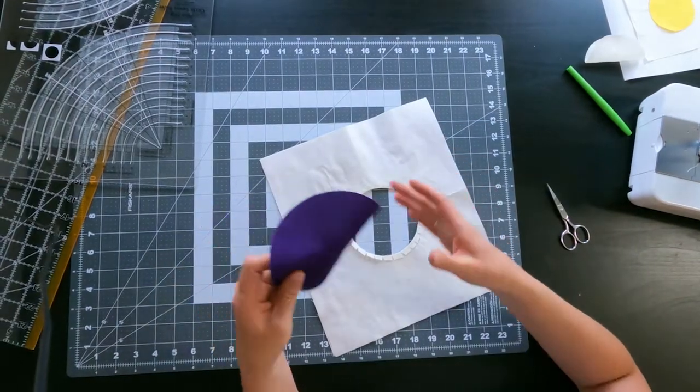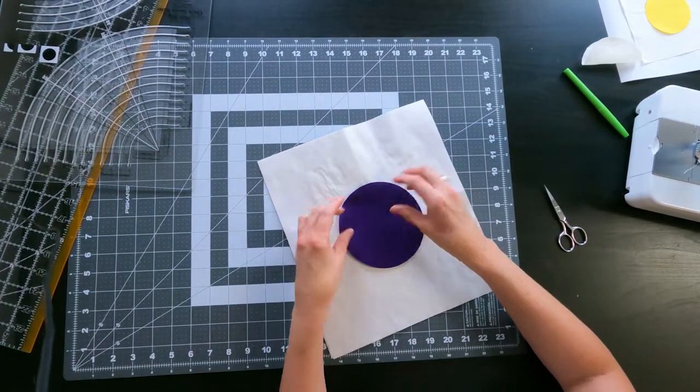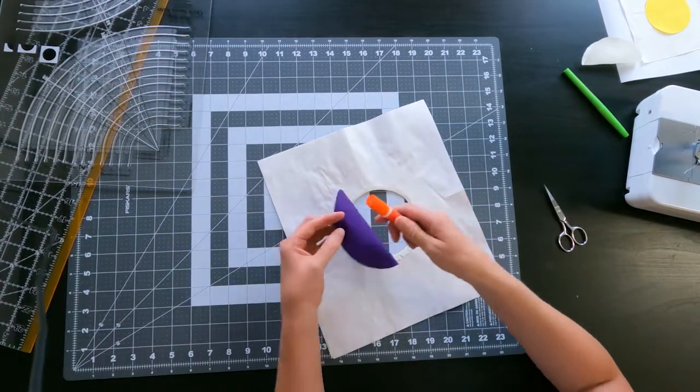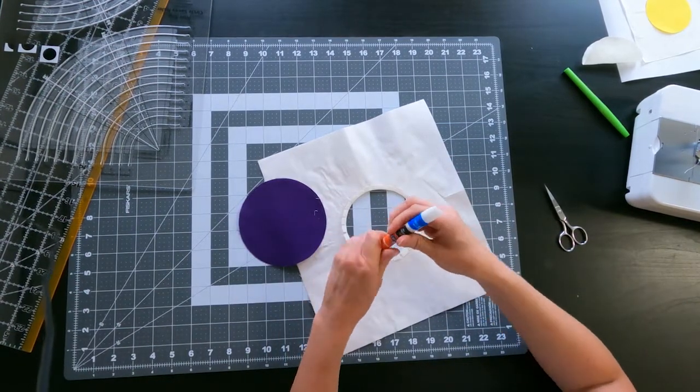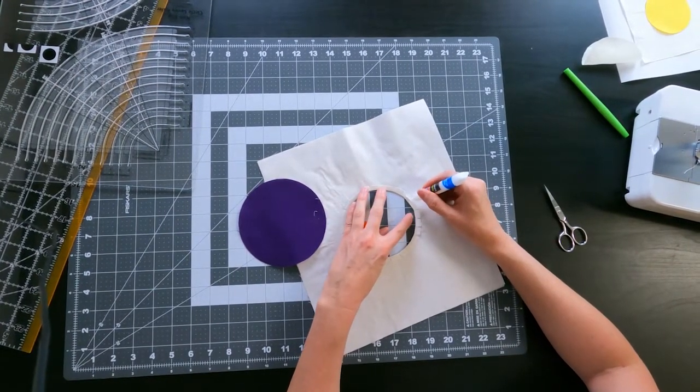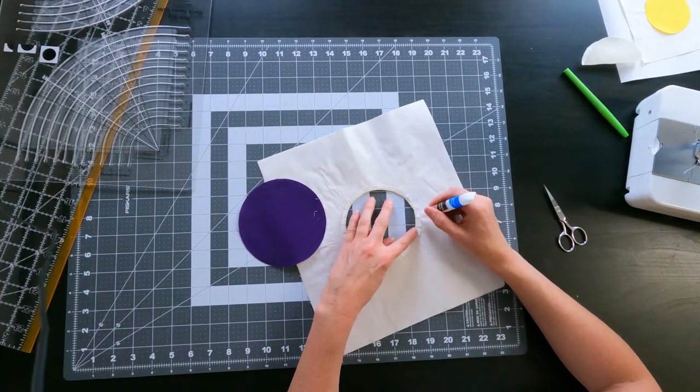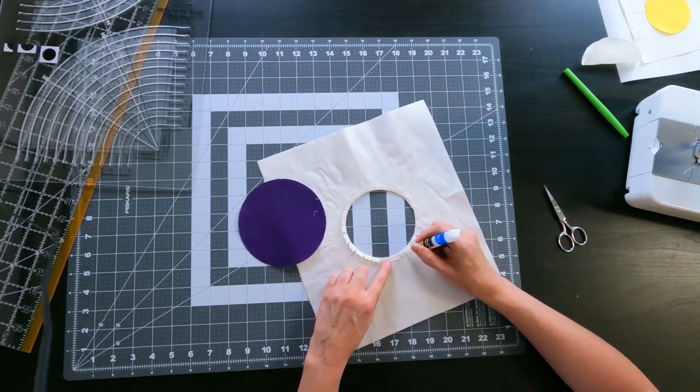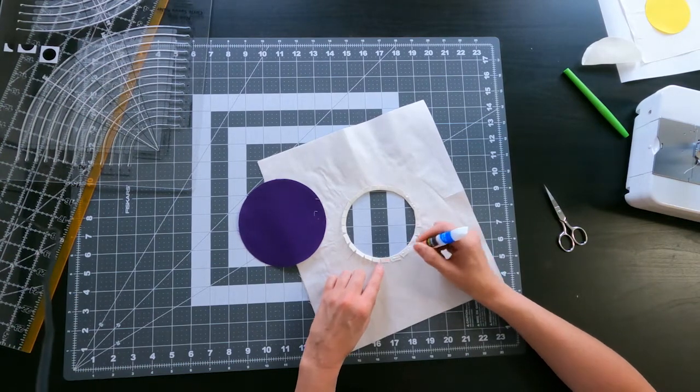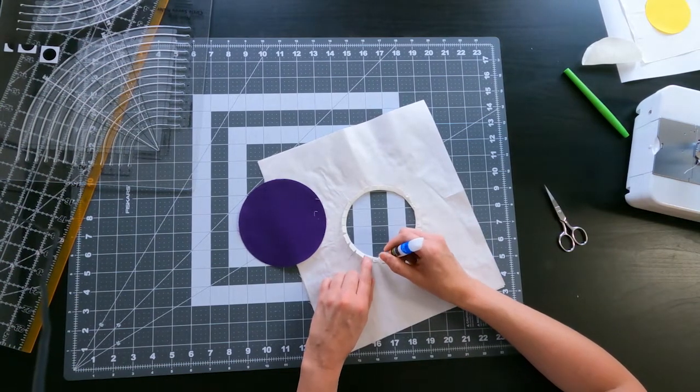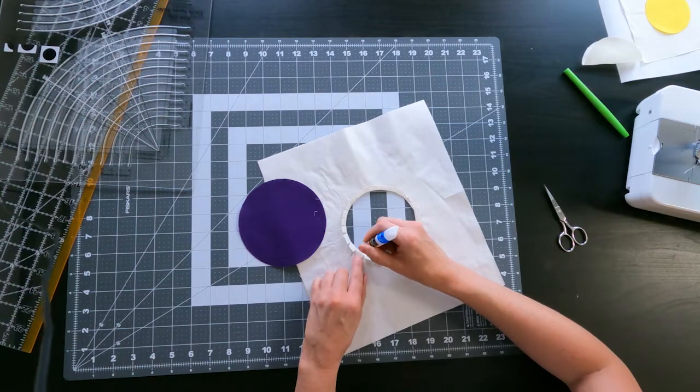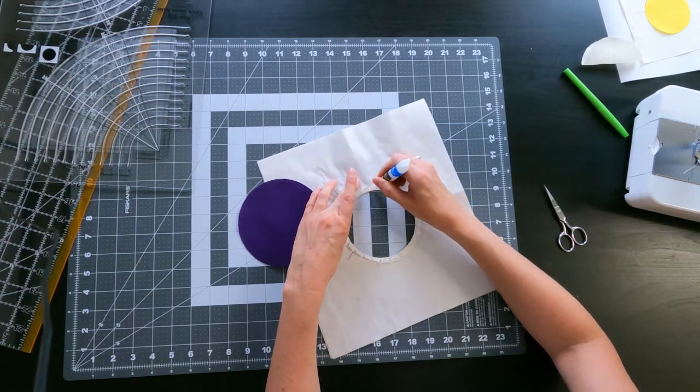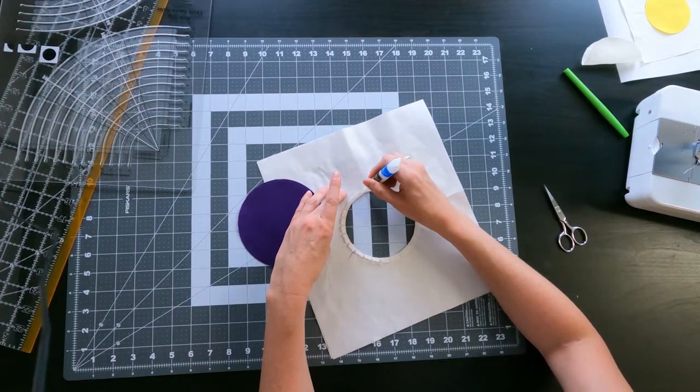Now that everything is nice and flat, we can go ahead and add our circle and we're going to attach that all the way around with just some washable glue. This is just an Elmer's school glue that's washable. You can use a fabric glue or whatever, but just make sure that it's something that's washable. You don't really want something that's permanent because we want to be able to have this still nice and soft after we finish that quilt and throw it in the wash. This is really just to hold it in place while we sew.